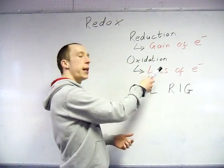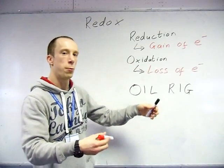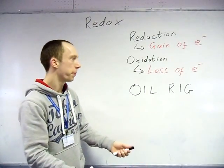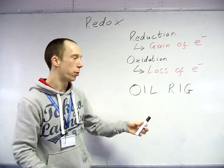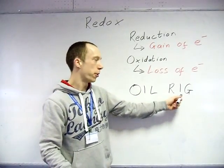Reduction is the gain of electrons, oxidation is the loss of electrons. So if one species wants to gain, something must give them, so it loses them.